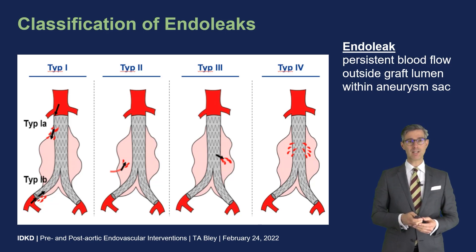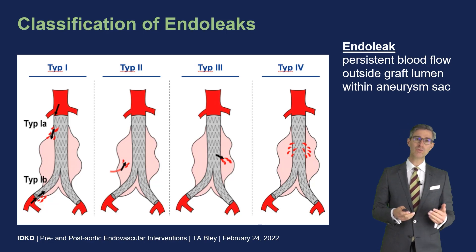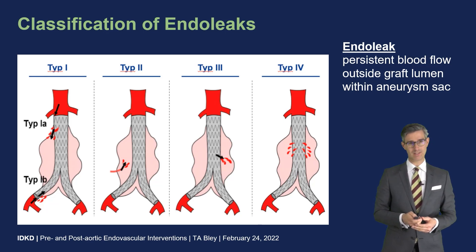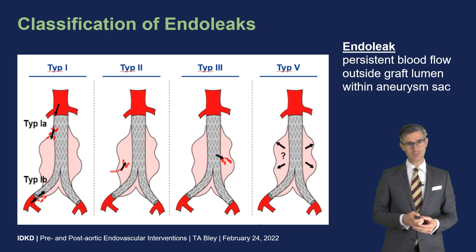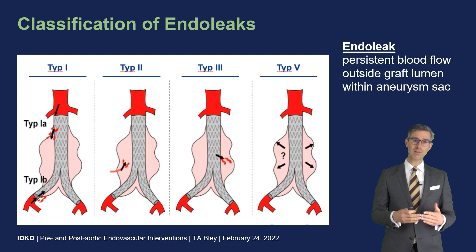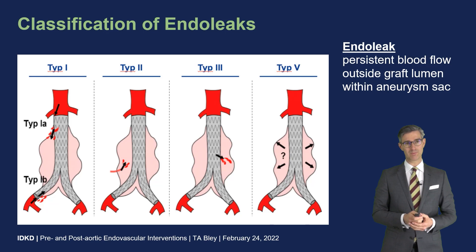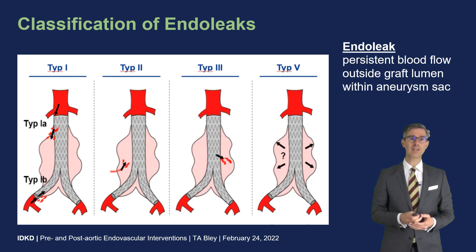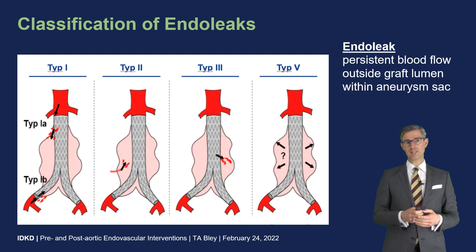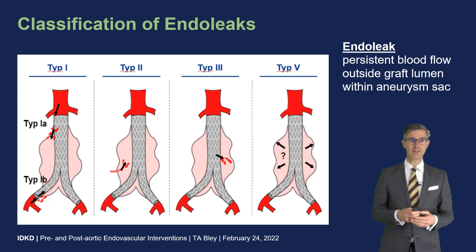Type IV endoleaks are due to porosity of the stent graft mesh and are rarely seen nowadays. Type V endoleak is also rarely seen — it involves an increase in aneurysm sac volume without visible contrast leaking into the sac. Most importantly, the most common is the type II endoleak, while type I and type III endoleaks require immediate treatment due to their high pressure.